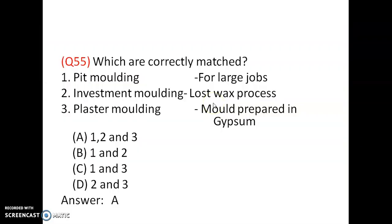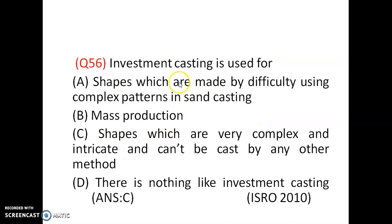Components prepared by investment casting are correctly matched as follows: pit molding is used for larger jobs, investment molding is the lost wax process, and plaster molding uses a mold prepared in gypsum. Options 1, 2, and 3 are correct. Investment casting is used for shapes which are very complex and intricate and cannot be cast by any other method — option C is correct.